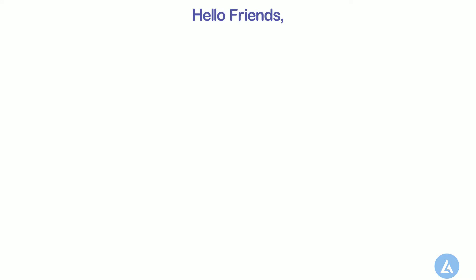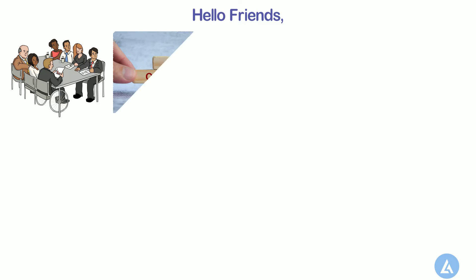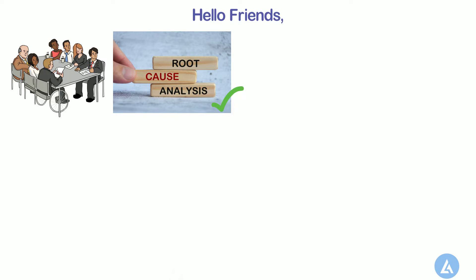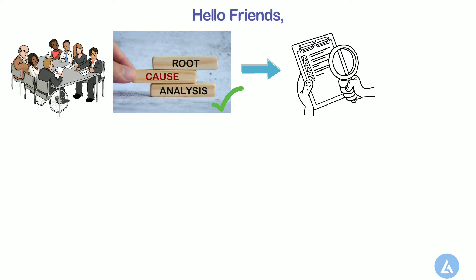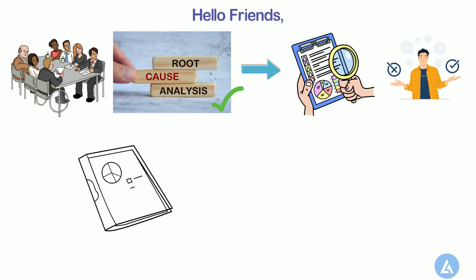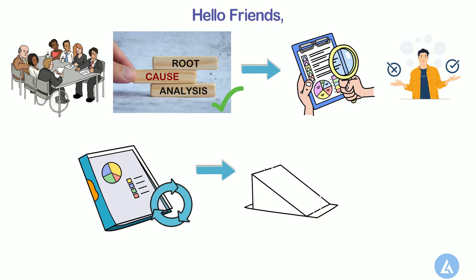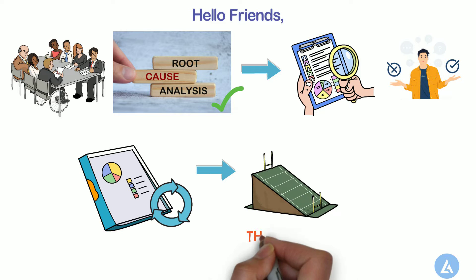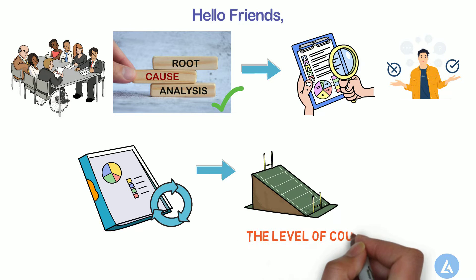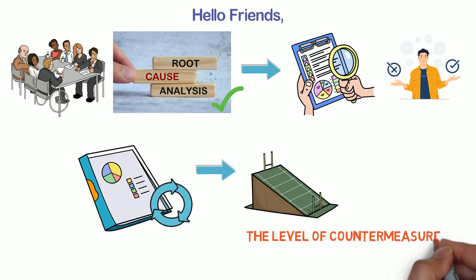Hello friends, welcome back. Have you ever seen that the project team has done great work till the root cause analysis of the Lean Six Sigma project, but still the project results were not sustainable? As a result, after some time the same project is initiated or relaunched. The major significant cause behind this failure is the level of countermeasures defined by the project team and Lean Six Sigma expert.